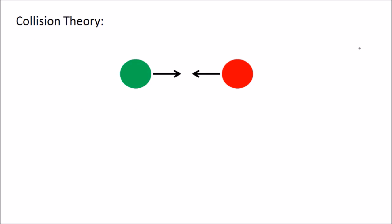A chemical reaction can only happen when reacting particles collide with each other. So if these are the two reactants, these two particles need to collide in order to react with each other. The thing is, not every collision leads to a reaction — the particles need to have enough energy to cause a reaction. So they not only need to collide with each other, they need to have sufficient energy. The minimum amount of energy that particles need to react is called the activation energy.